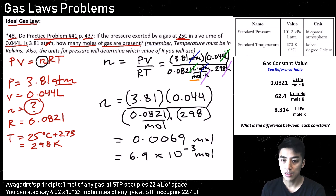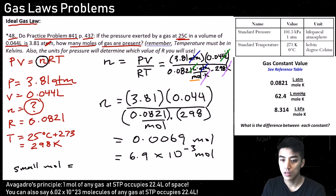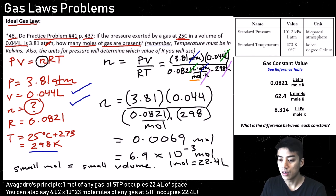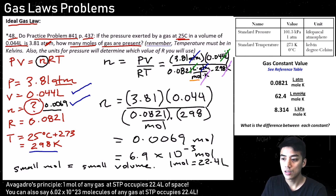That's our answer. We want to make sense of what we solved for. We have a very small number of moles — 0.0069 — so we should also have a very small volume, and that looks appropriate. Our temperature is roughly 298 K, almost STP. Under standard temperature and pressure, 1 mole equals 22.4 liters, so these numbers coming back proportionally makes a lot of sense.